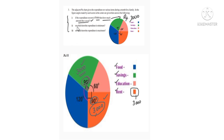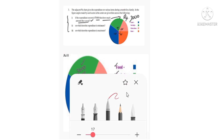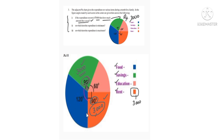Next, question 2: on which item is the expenditure minimum? The minimum expenditure means the smallest angle. Observing the angles: 90, 120, 90, 60. The smallest angle is 60 degrees, which is in biscuit color — that represents education. So the answer is: the minimum expenditure is on education.